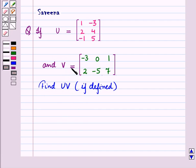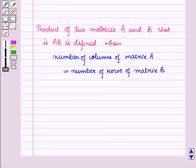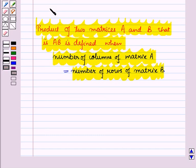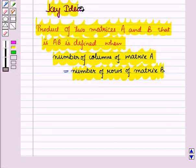Before starting the solution of this question, we should know a key result: the product of two matrices A and B is defined when the number of columns of matrix A is equal to the number of rows of matrix B. This result will work out as a key idea for solving the given question.